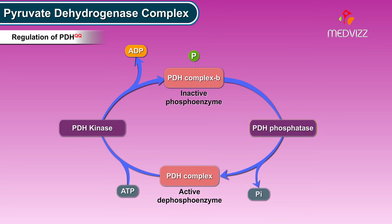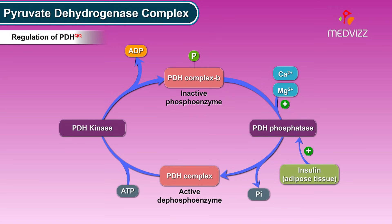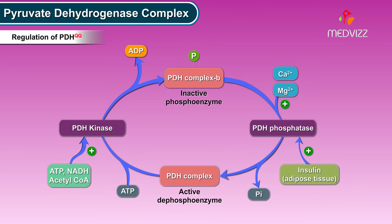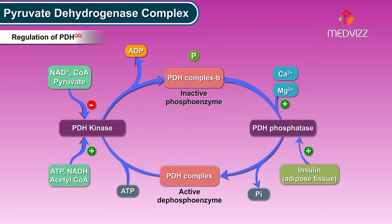PDH phosphatase, which maintains the PDH complex in its active state, is promoted by calcium, magnesium, and mainly insulin — so insulin activates the PDH complex. PDH kinase, which renders PDH inactive, is promoted by ATP, NADH, and acetyl coenzyme A, while it is inhibited by NAD⁺, coenzyme A, and pyruvate.